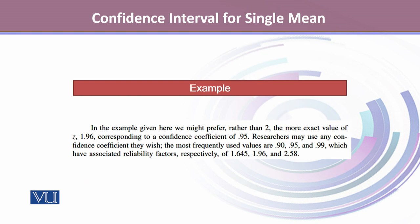Instead of 2, we might use the more exact Z value of 1.96, which corresponds to a confidence coefficient of 0.95. Researchers may use any confidence coefficient they wish.